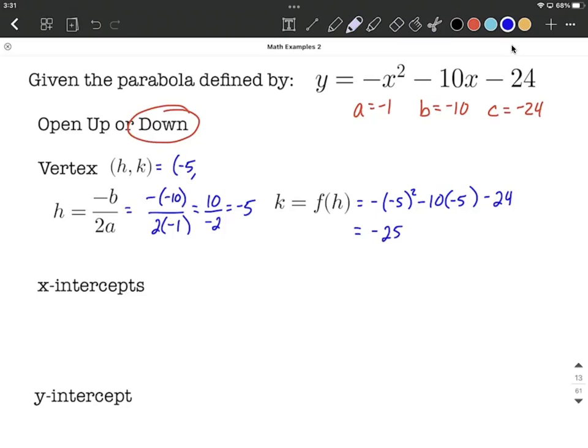Next, we have negative 10 times negative 5 makes positive 50. I'll bring that minus 24 along. Combining some like terms here, negative 25 plus 50 is positive 25. Minus 24 makes 1. So negative 5, 1 is going to be our vertex.